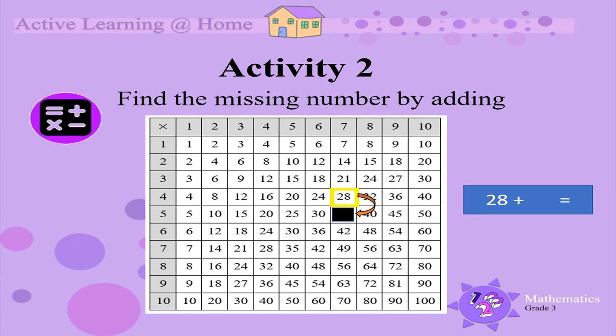If you said 7, you are correct. You add 7 to 28 because 28 is in the 7's column. And in the 7's column, we count in 7's. Therefore, the missing number is 35.